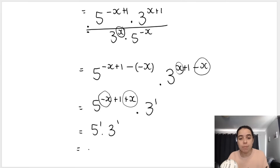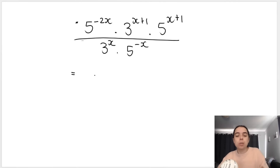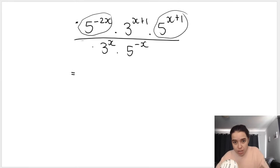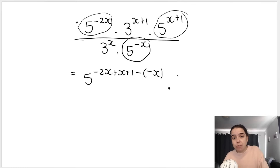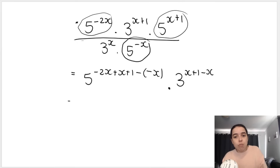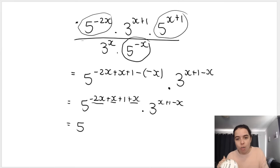Final answer: 5 × 3 = 15. Always simplify all the way to a number. The quick one-step version: add all same-base exponents across levels simultaneously — the x terms all cancel and you're left with 5¹ × 3¹ = 15.